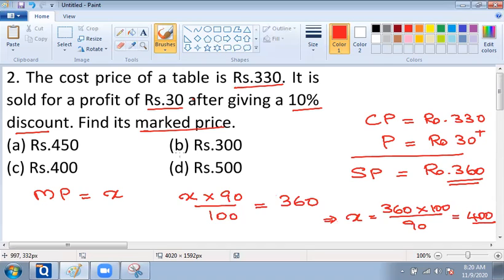We are asked to find the marked price. We assumed the marked price is equal to X and we have identified that it is equal to 400. So we can conclude that the marked price of this table is equal to Rs. 400.